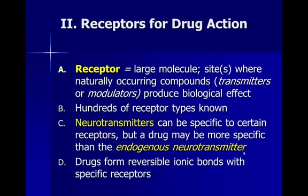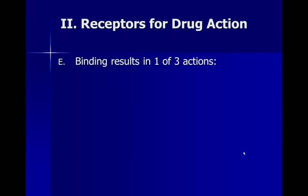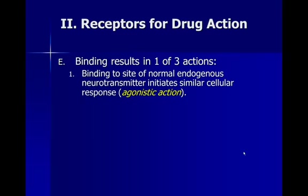What happens is drugs will actually form what we call a reversible ionic bond with a specific receptor — they'll bind to the receptor, that bond will get reversed, and then that's how they'll get eliminated. When a drug or neurotransmitter binds to a cell, there are one of three things that can occur. Binding to the site of a normal endogenous neurotransmitter can initiate a similar cellular response — we call that an agonist action. When we talk about a drug being an agonist, that means it is acting like the neurotransmitter itself. Cocaine, for example, is a dopamine agonist — it will affect the neurotransmitter system directly and also cause an increase in release of dopamine.